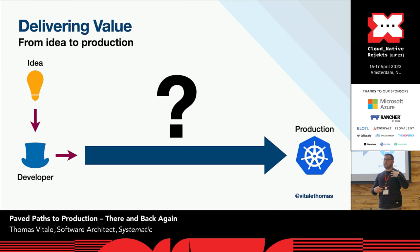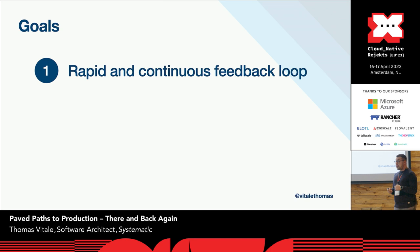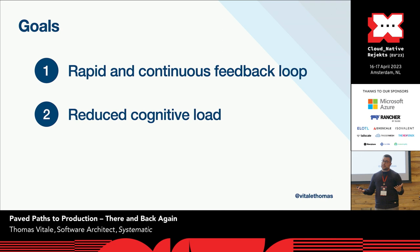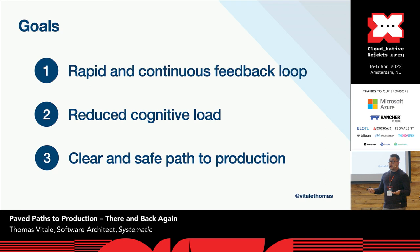For today, I want to explore how we can build such a path to production. I'm going to aim at achieving three main goals. The first goal is a rapid and continuous feedback loop for developers as part of the initial development workflow. The second goal is reducing the cognitive load — I want to establish such a path to production without putting too much burden on the development team. And finally, I want to establish a very clear and safe path to production. These three will be our guiding principles.